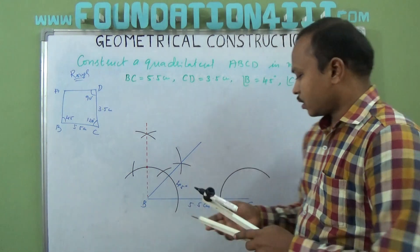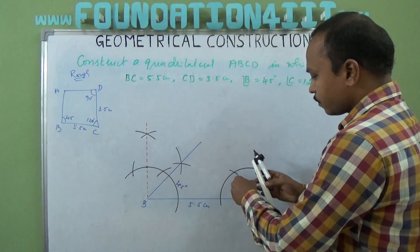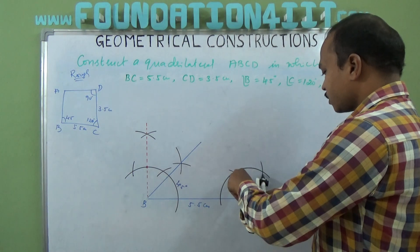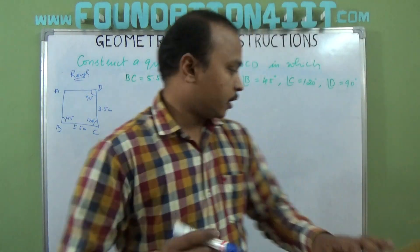So we can take this arc. Without changing the arc, without changing the radius, cut this arc from this point. 60, from 60, one more 60 is 120. Extend this 120 degree line.